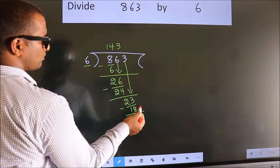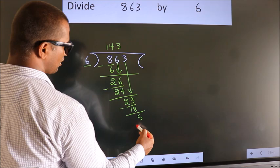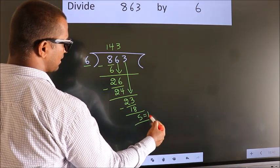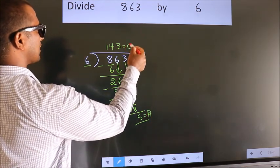No more numbers to bring down, so we stop here. This is our remainder. This is our quotient.